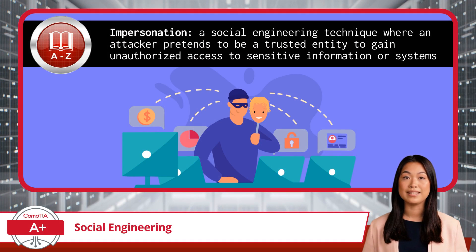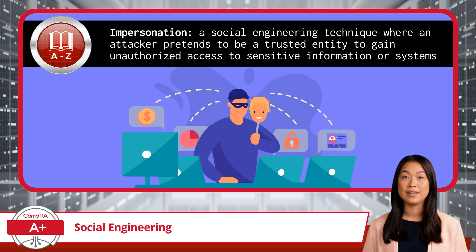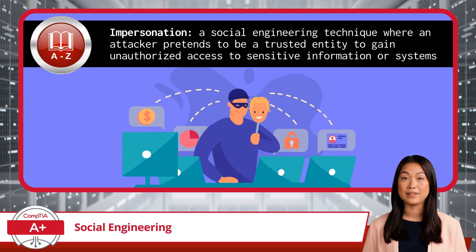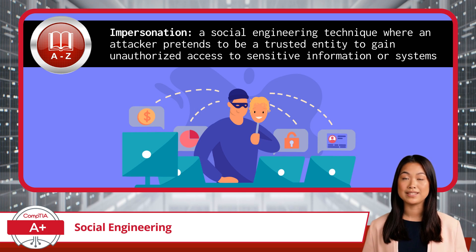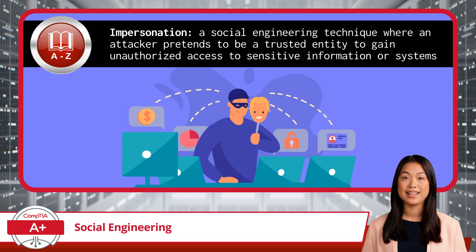Now, most of us have a healthy distrust of strangers. That is why hackers typically resort to impersonation to increase their chances of success. Many hackers are gifted in their ability to pretend to be someone else entirely, either in person or online. The hacker pretends to be a trusted entity, such as a colleague, authority figure, or service provider, to gain unauthorized access to sensitive information or systems. They might show up in person, send you an email, text, or give you a phone call, with the ultimate goal of convincing you that they're someone you know and trust, to get you to spill the goods.